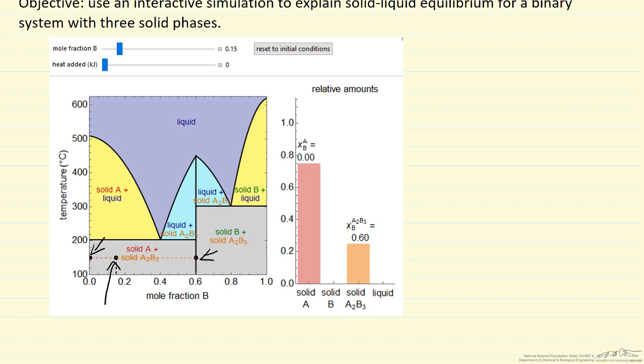So in this diagram, we have a region with solid A in equilibrium with the compound A2B3, or we can have solid B in equilibrium with the compound. We can also have solid B in this yellow region here, in equilibrium with the liquid, where the liquid contains both A and B. Or we can have solid A over here, again in equilibrium with the liquid that contains both species. Or the blue regions correspond to the compound A2B3 in equilibrium with the liquid that contains A and B.